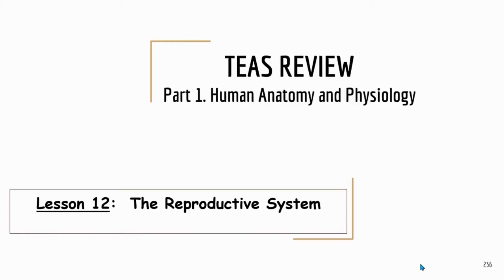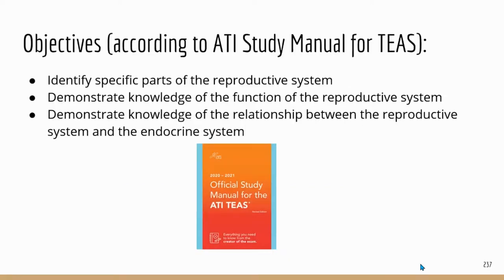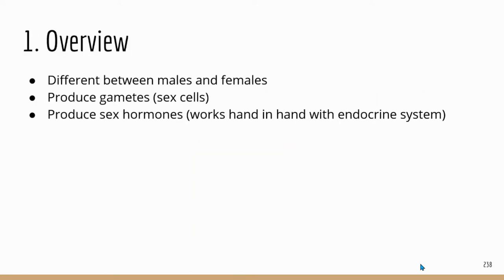Welcome back to another TEAS review lesson. We are going to look at the reproductive system today. The TEAS questions, at least for the ones I have seen, and also the information from the study manual, seem to suggest that the questions are going to be more focused on the specific parts and their associated functions. Another focus is going to be some of the hormones involved in the system — the male and female sex hormones and what they do, how they contribute to the functions of the reproductive system.